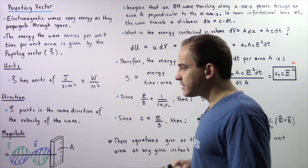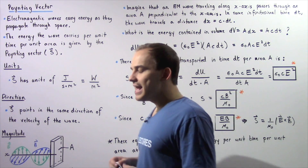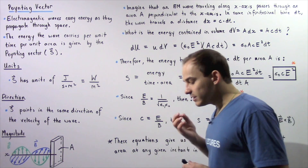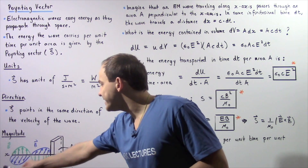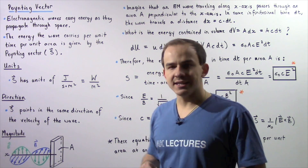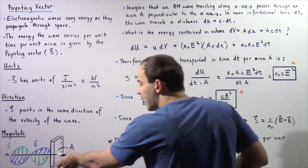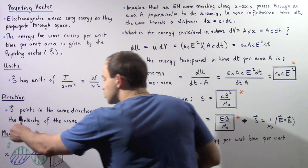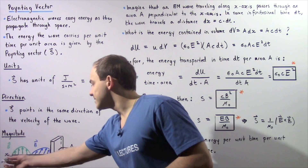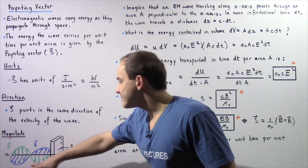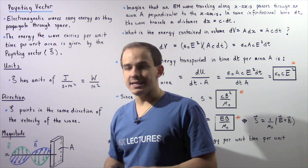Now let's discuss the magnitude of the Poynting vector and the equation that gives us that magnitude. Recall that electromagnetic waves consist of alternating electric and magnetic fields. Consider an electromagnetic wave propagating in the positive x direction, where the electric field lies along the y-axis and the magnetic field points along the z-axis, out of the board.